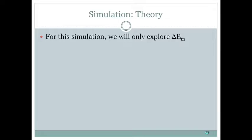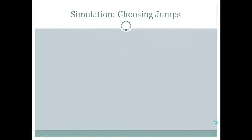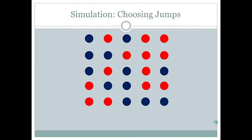Since we only have two types of atoms in this alloy, there will only be three types of bonds: AA, BB, and AB, with corresponding bond energies VAA, VBB, and VAB. For our simulation, we will start with a 2D square lattice with randomly placed A and B atoms.